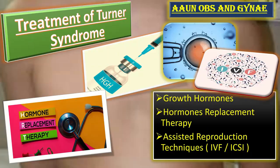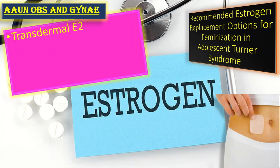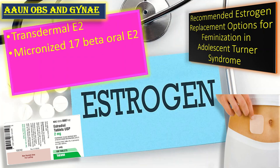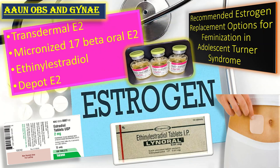The recommended estrogen replacement options for feminization in adolescent Turner syndrome include: first, transdermal E2, with a pubertal initial dose of 3 to 7 micrograms per day and adult dose of 25 to 100 micrograms per day. Second, micronized 17-beta oral E2, with a pubertal dose of 0.25 milligrams per day and adult dose of 1 to 4 milligrams per day. Third, ethinyl estradiol, with a pubertal dose of 2 micrograms per day and adult dose of 10 to 20 micrograms per day. The last is depot E2, given at a pubertal dose of 0.2 milligrams per month and adult dose of 2 milligrams per month.